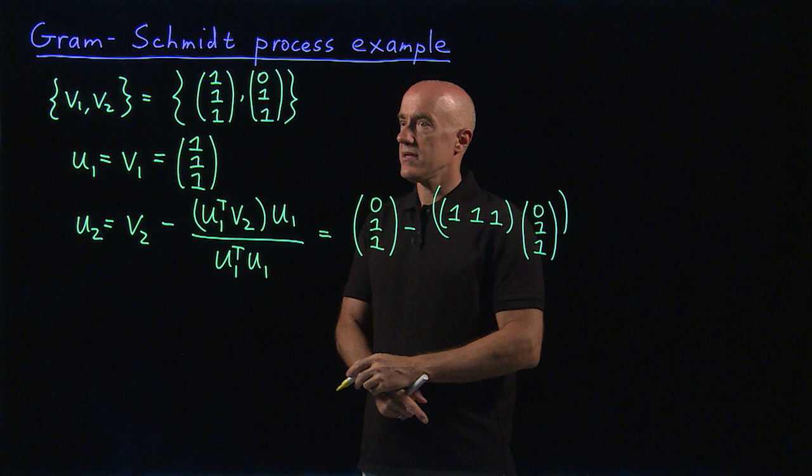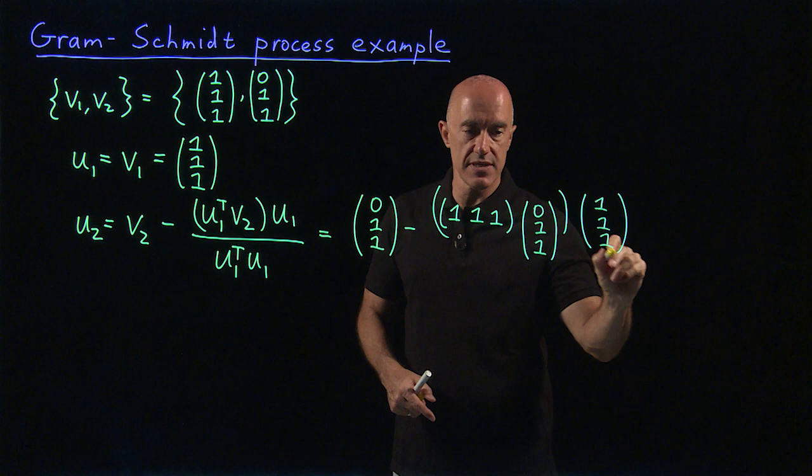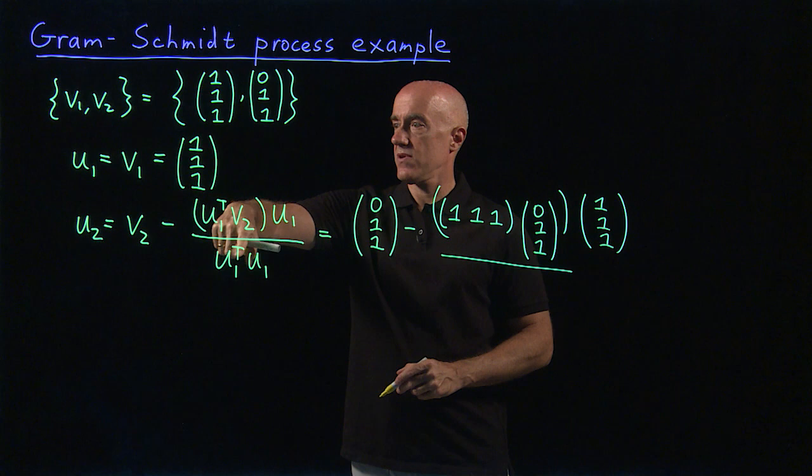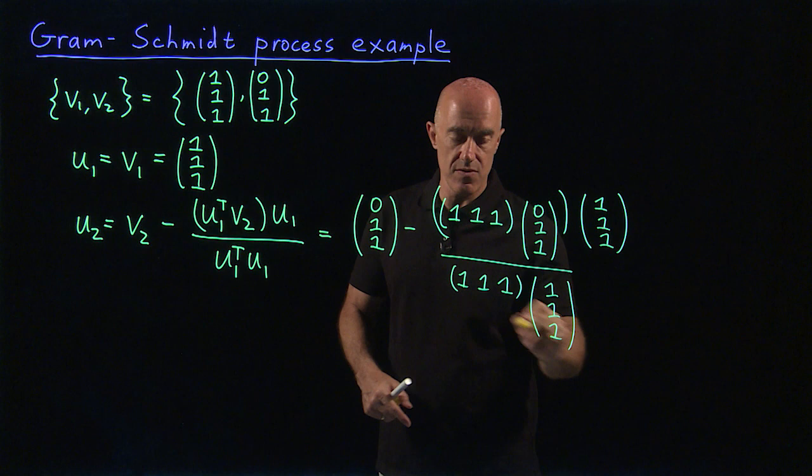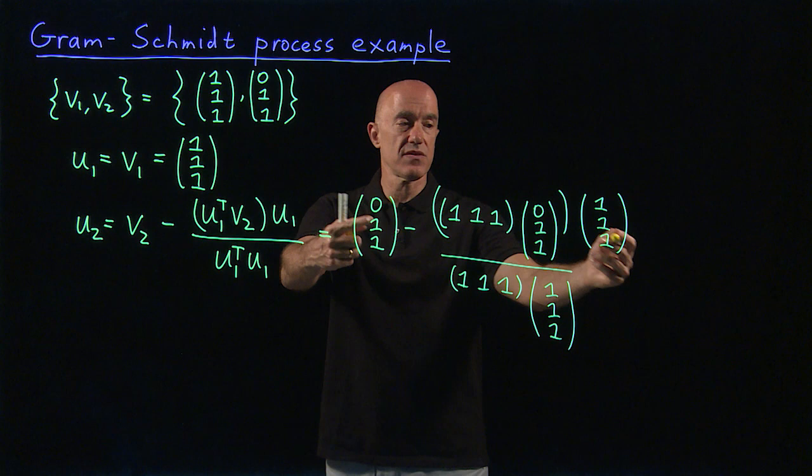Times U1, which is (1,1,1), which is a vector, divided by the length of U1, which is (1,1,1). The length of U1 squared times (1,1,1). So the row vector times the column vector. So that's exactly what it is.